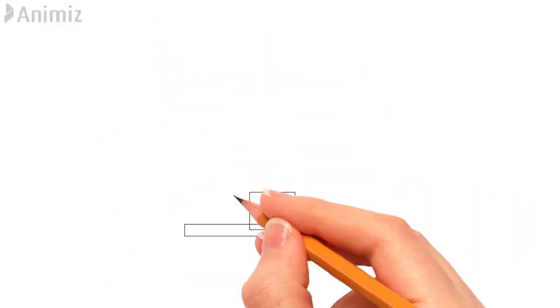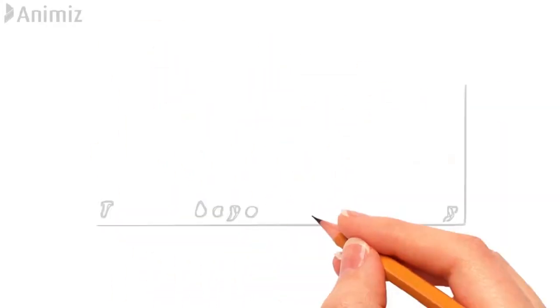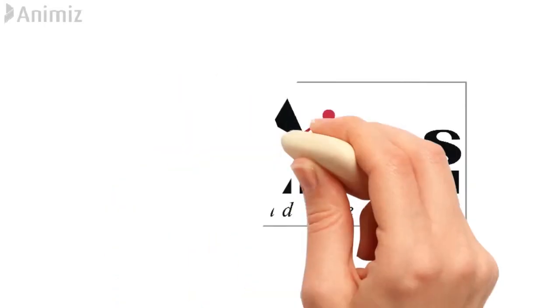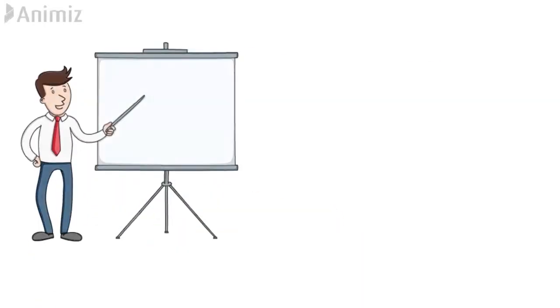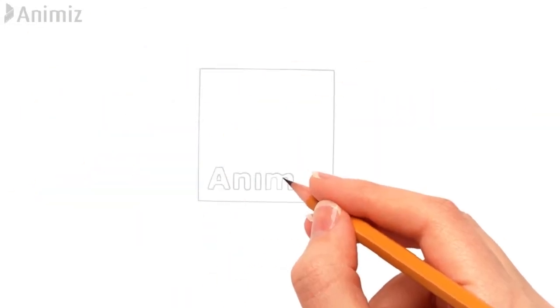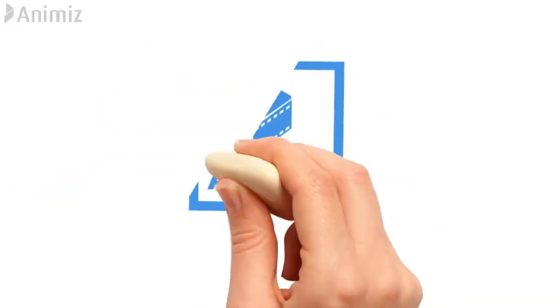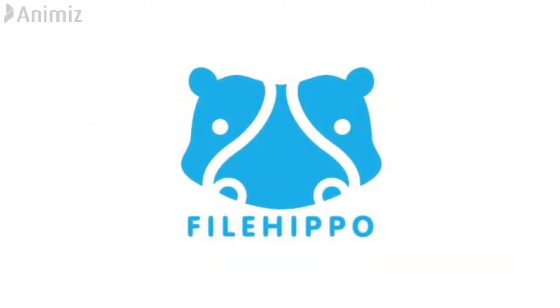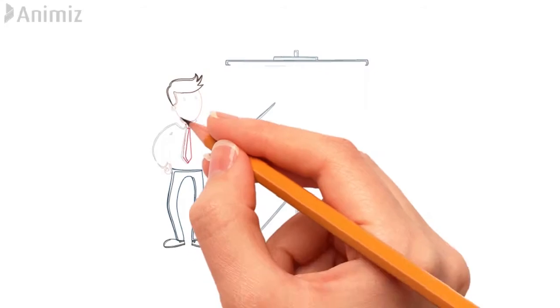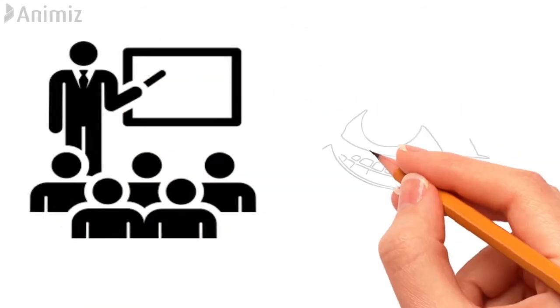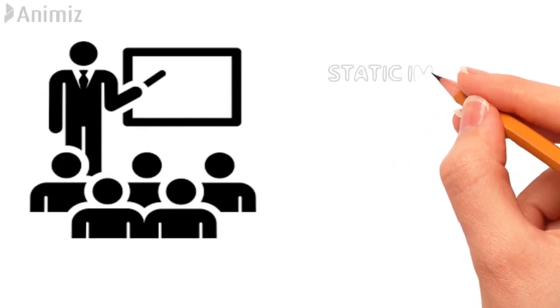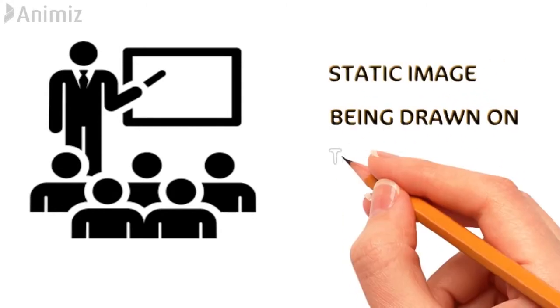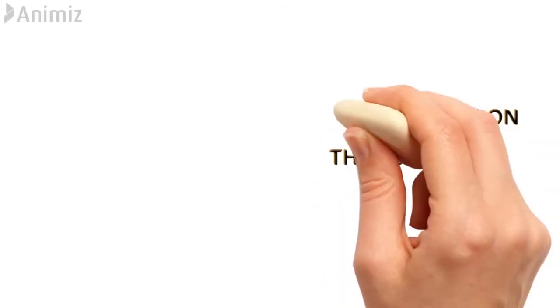Hello everyone, this is Michael, multimedia educator from AMS Media. In this video I will show you how to create a simple whiteboard animation using a free application called Animation Maker. You can easily download this application from Google at filehipper.com. Before getting started, let's read a little about whiteboard animation. Whiteboard animation is a video style that shows the viewer a static image being drawn on the screen, exactly the same way you are watching this video.